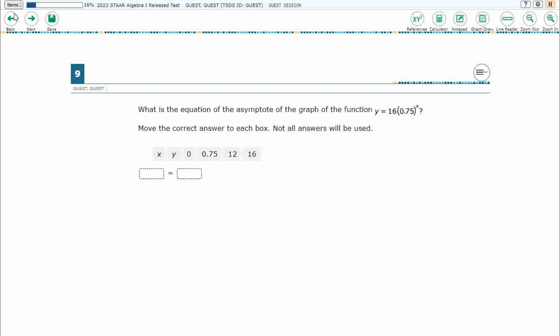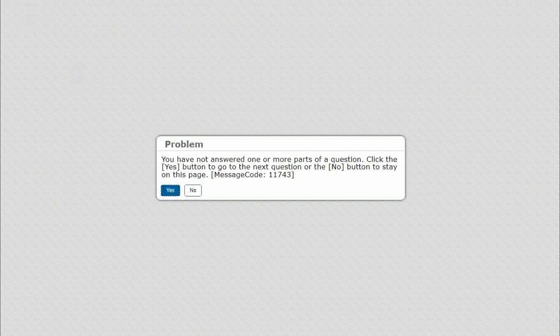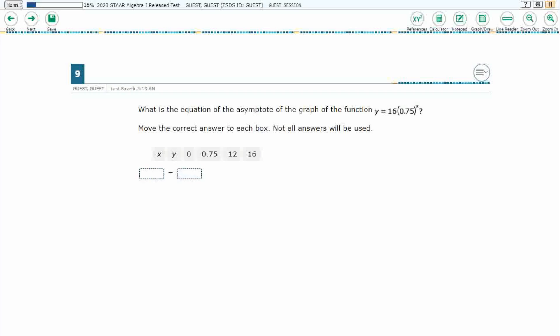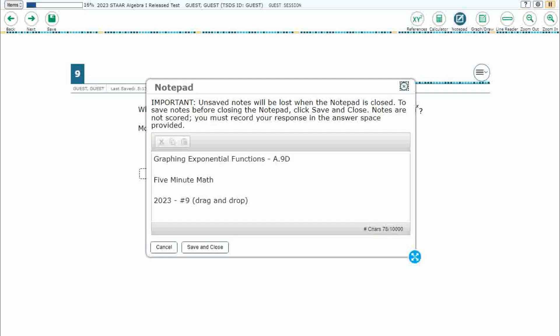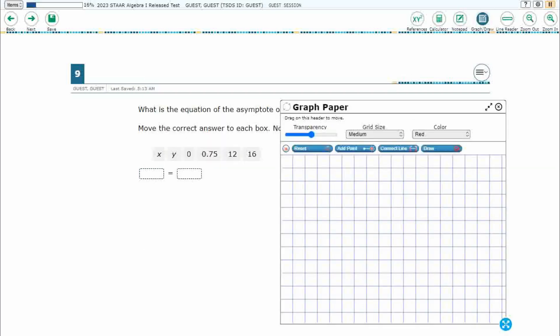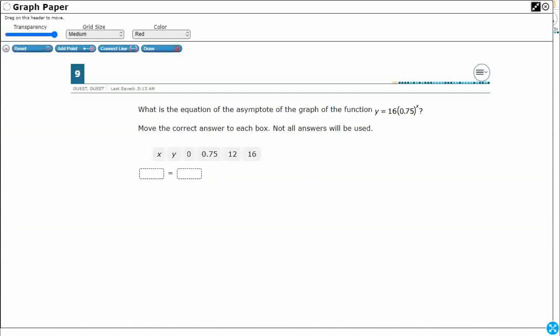So we have drag-and-drop here, so we need to use two different answers. You notice if we just try to use one, it's going to give us this error message saying you have not used or answered everything. So it's a two-point question. Let's see exactly what it is that we are being asked to look at here.